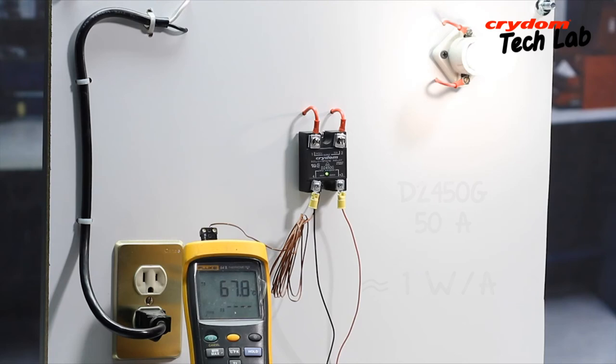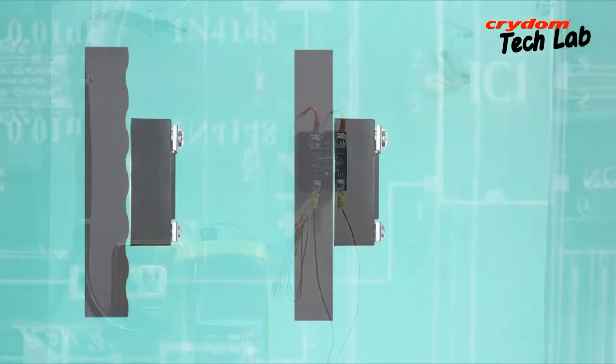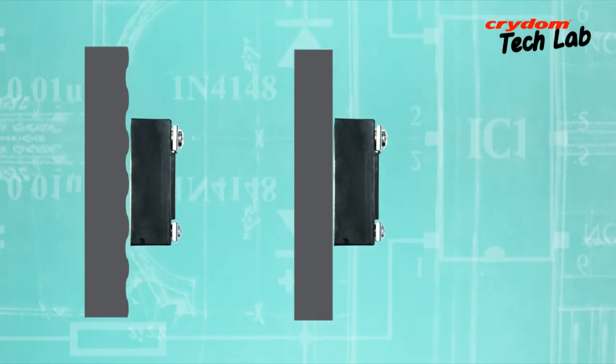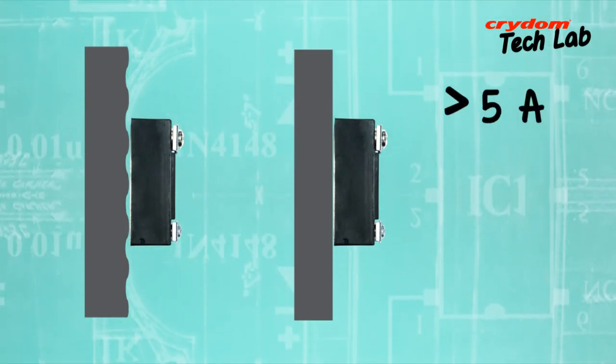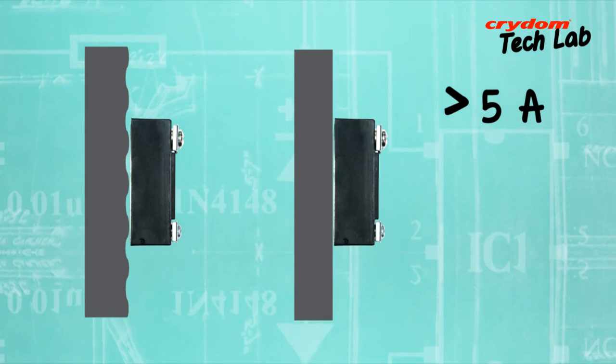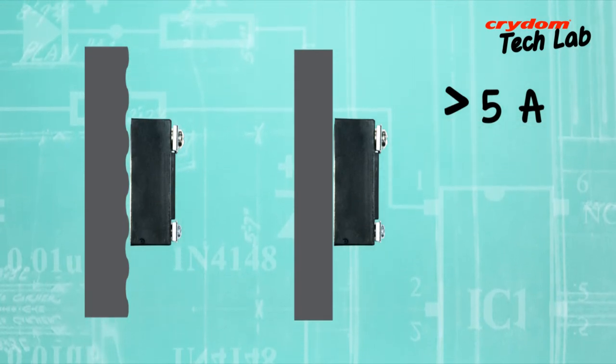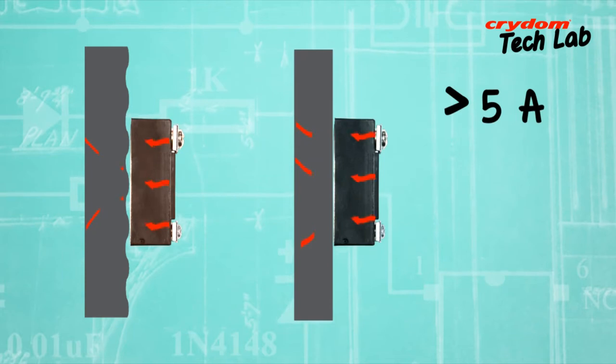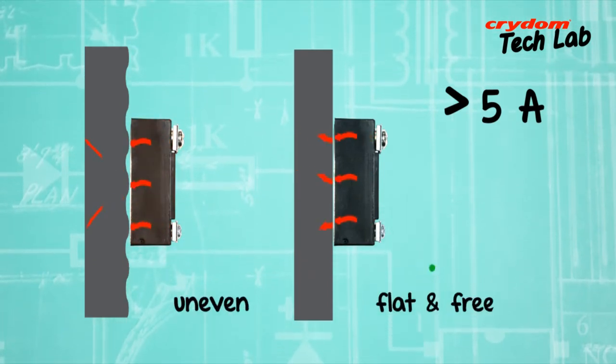Efficiently removing this energy from the relay helps ensure its reliability. The mounting surfaces of SSRs rated above 5 amps also typically serve as a transfer area to move thermal energy out of the relay into the surrounding environment. These surfaces should be flat and free of any interfering materials.